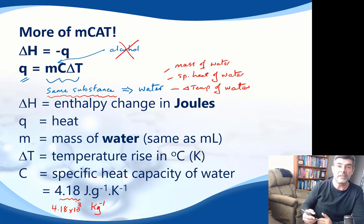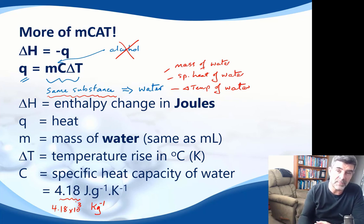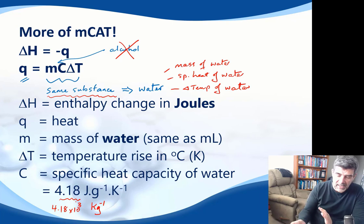That means that the value here is often listed as 4.18 times 10 to the 3. When you convert from grams to kilograms, you're going to divide by 1,000, so therefore our value for the specific heat is 1,000 times bigger, and those two things will cancel each other out.